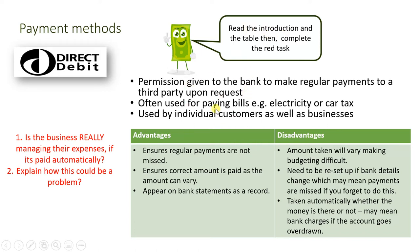Read the introduction and the advantages and disadvantages table, then complete the two red questions. Advantages of direct debit: it ensures regular payments are not missed; the correct amount is paid even if it varies; and payments appear on bank statements as a record. Disadvantages: the variable amount makes budgeting difficult; it needs to be reset if bank details change, potentially causing missed payments; it's taken automatically whether money is available or not, possibly causing overdraft charges; and by agreement, the provider can debit up to five days before or after the agreed date — think about what this does to cash flow.